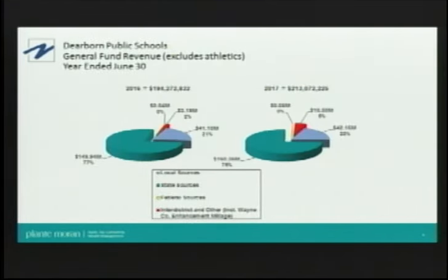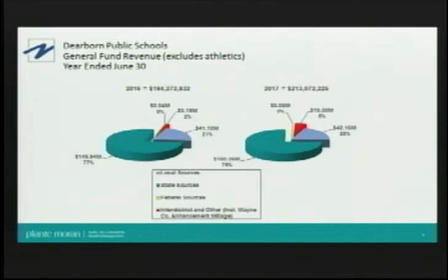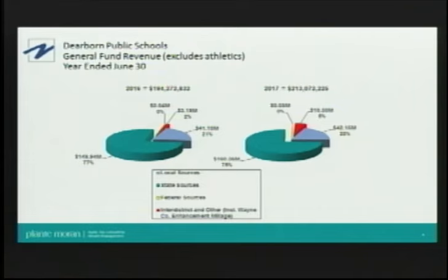Looking at general fund revenue, for 2017, revenue is approximately $213 million, with the largest piece from state sources. Roughly 70% of general fund revenue comes through the state foundation allowance — a formula based on the district's blended pupil count of approximately 20,600 students times its foundation allowance of about $8,491. That per-pupil foundation is determined in Lansing, meaning local districts are essentially dependent on Lansing for their funding level. One item to note: inter-district sources increased dramatically from about $3 million in 2016 to about $10 million in 2017, primarily due to the enhancement millage passed in Wayne County, contributing roughly $7 million.